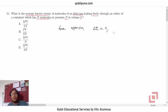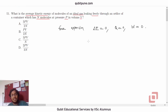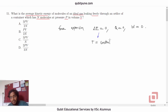Q is zero and W is zero. If delta E is zero, that means there is no change in the internal energy or thermal energy of the system. That basically means temperature remains constant.